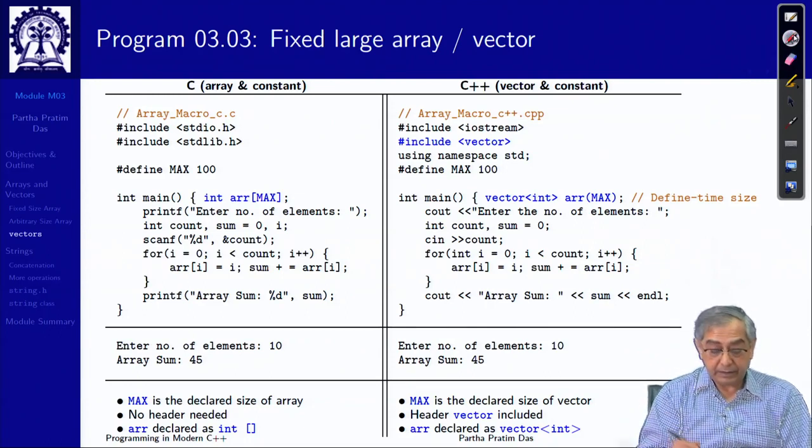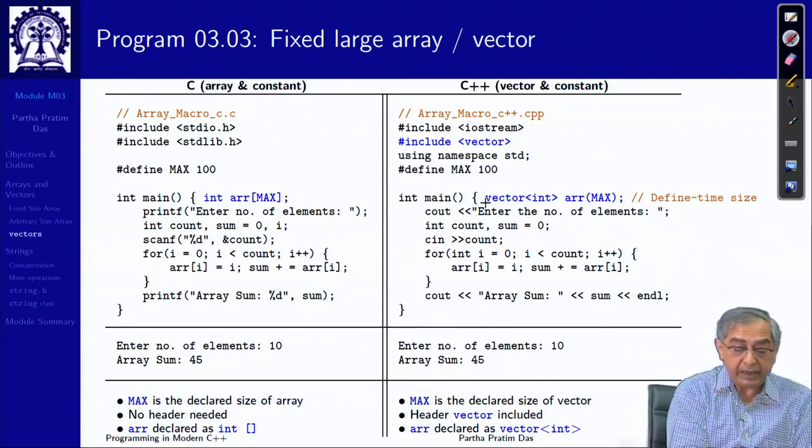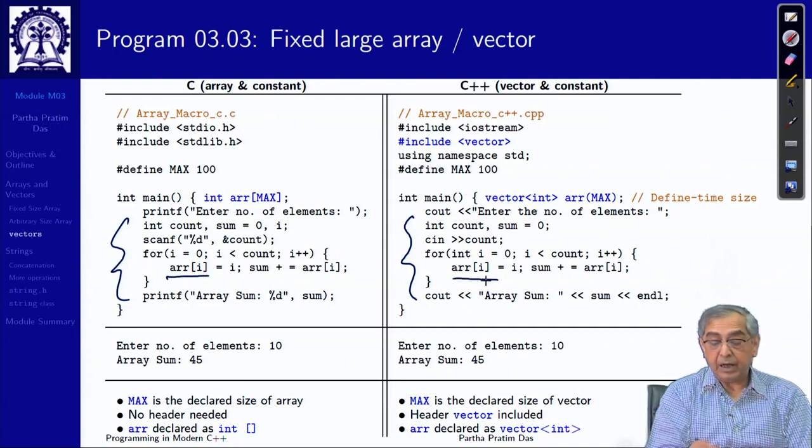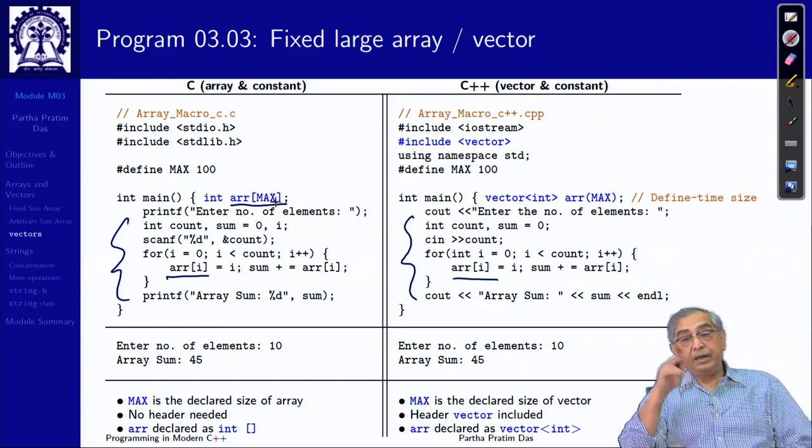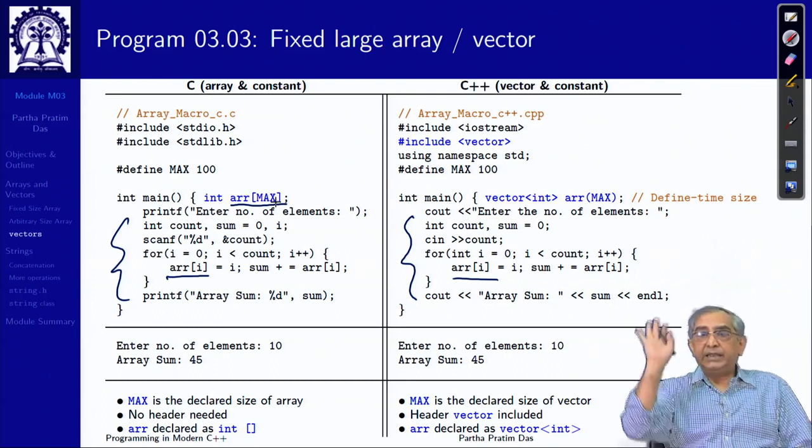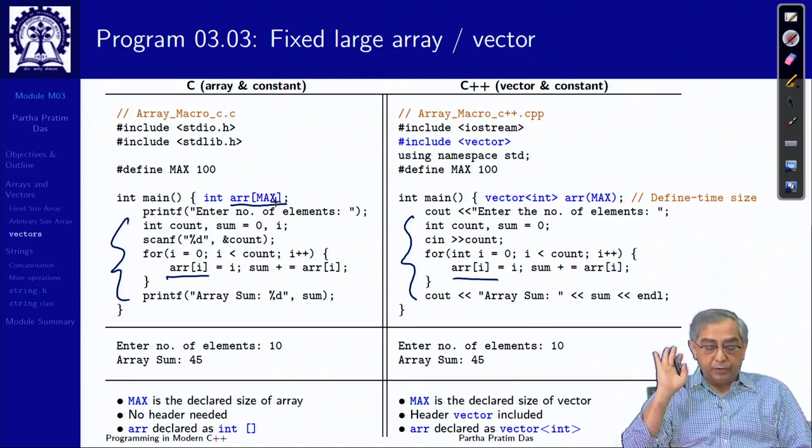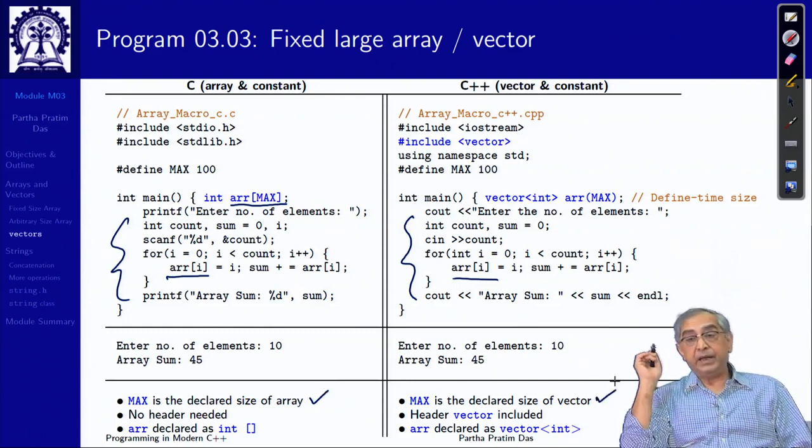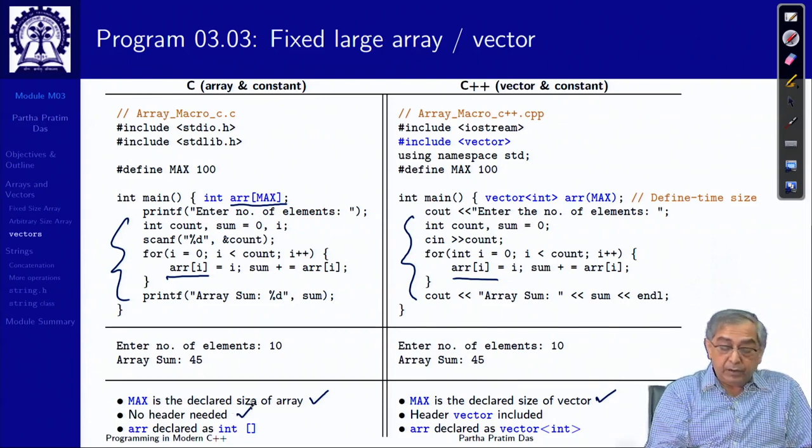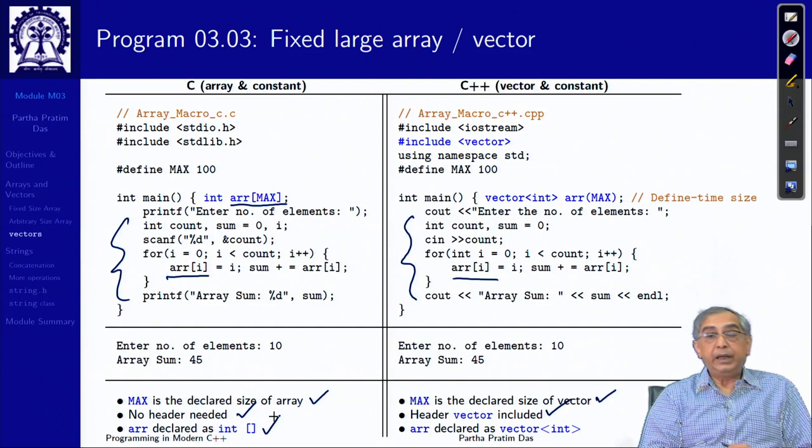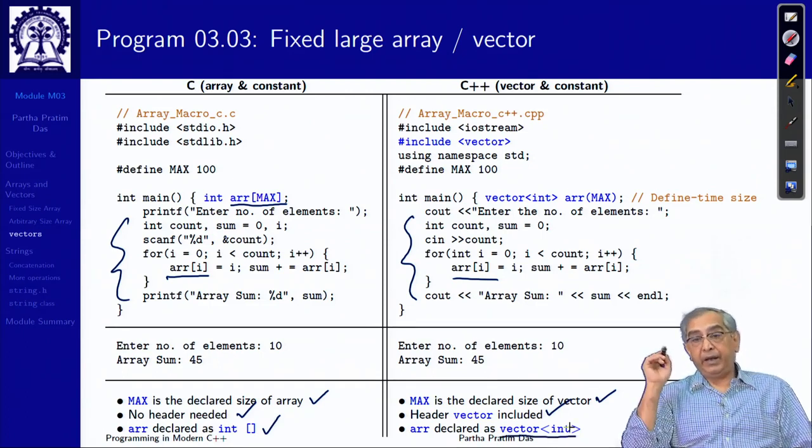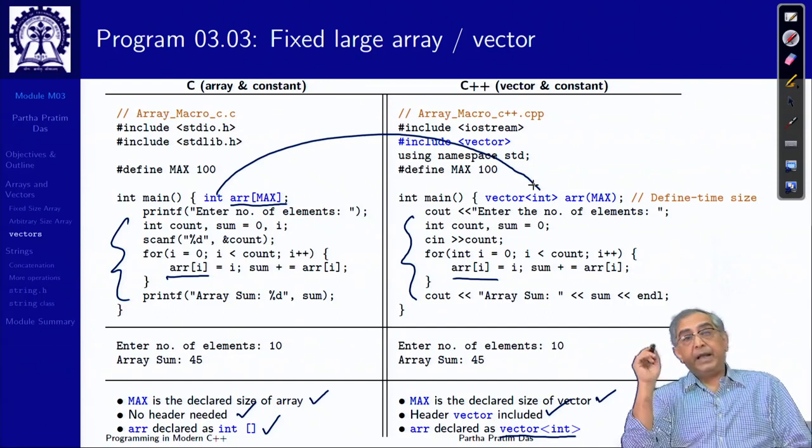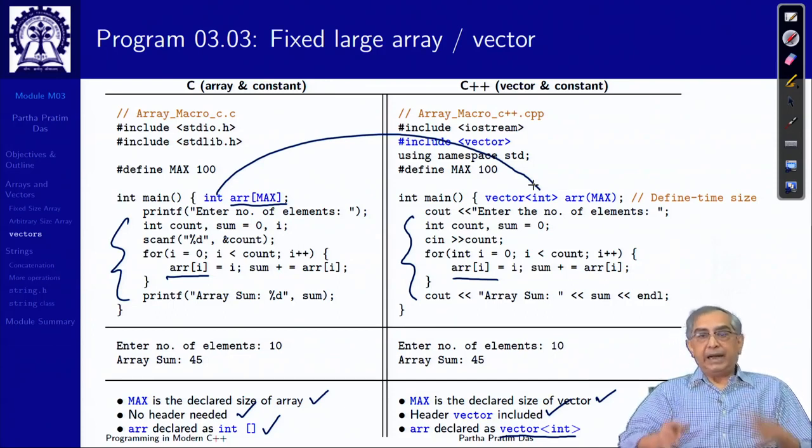You can relate that int comes here, array name is here, the size is here, and instead of this built-in array, I do this vector stuff, a particular notation. Then once I have declared that, I can use it exactly in the same way. I have not declared it with this array notation, but I can use it in the array notation. So, nothing else changes, it is just the declaration that is different.